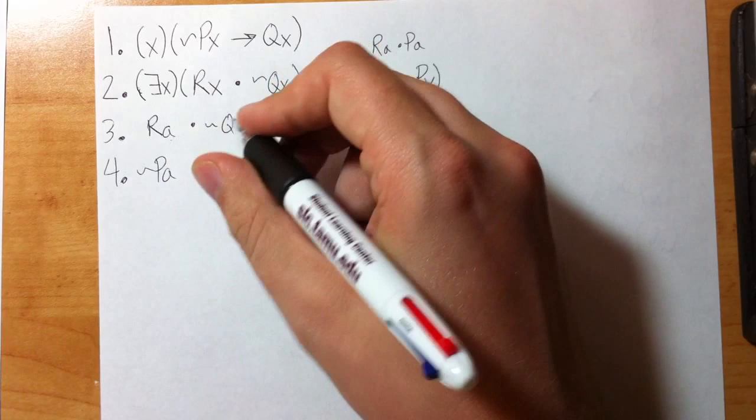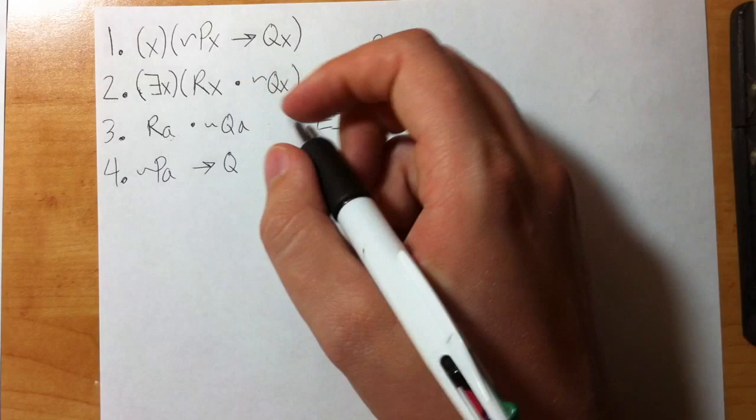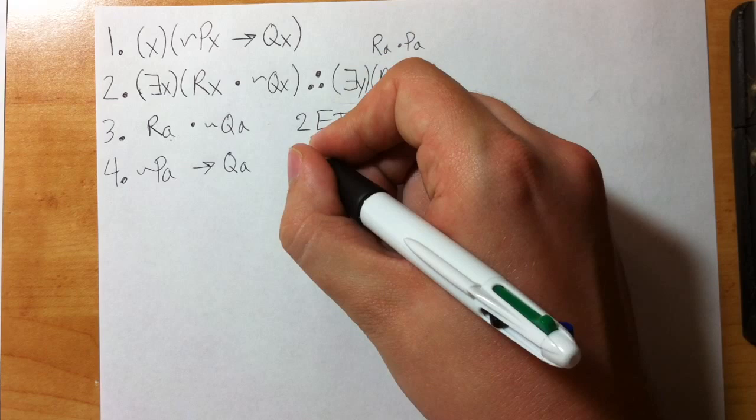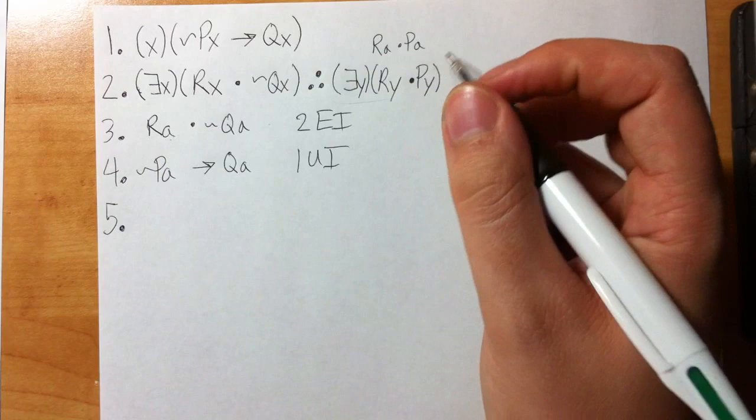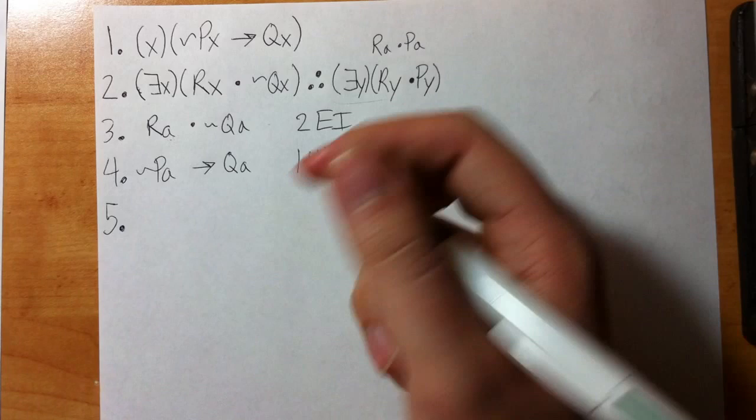Now we can do UI, because remember there's no restrictions. Do not, do not, do not be the person that picks b on line four thinking that you have to use a new letter when you use UI. Remember, you do not have to use a new letter with UI. There are no restrictions with UI. You can pick whatever letter you want with UI. I chose a because I wanted to make it match, because now I can do stuff with it.